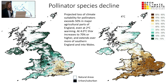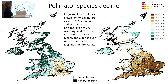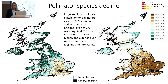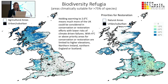Extracting the pollinator species — many of our crops rely on pollinators — this shows the projected loss in pollinators. This exceeds 50% in major agricultural parts of England even at two degrees. At four degrees, this increases to 70% and extends over more of southern England and into Wales. This is quite a serious issue and may compromise some of the agricultural crop opportunities shown in the earlier slides.